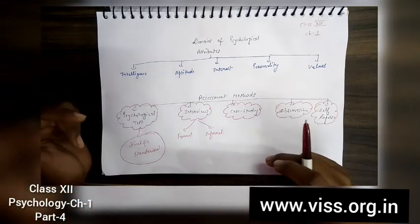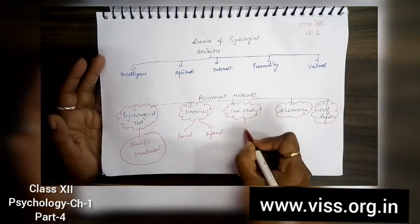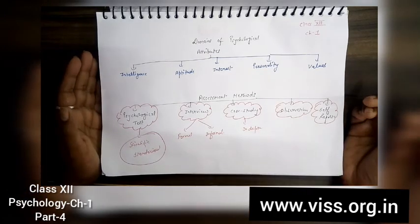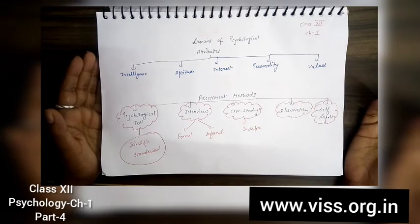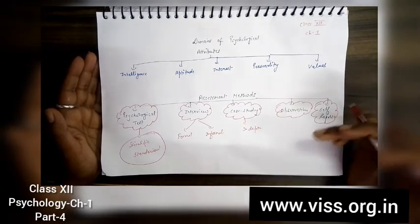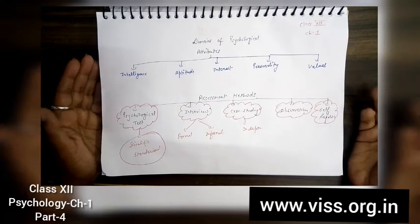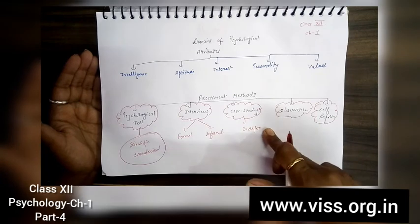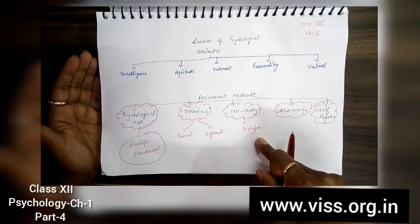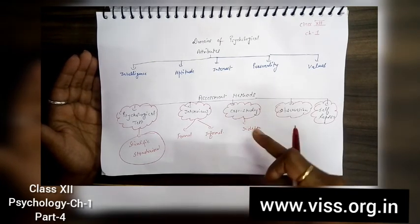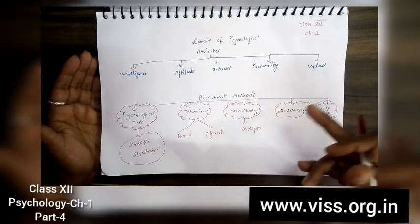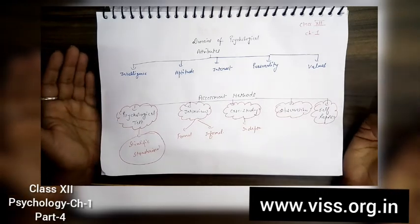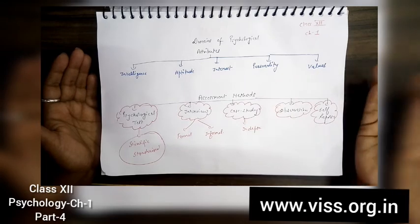Next is the case study. Case studies are in-depth, and that could be done on an individual in detail. The entire history of the individual is taken care of in this, and it is a time-consuming process to understand why a particular person behaves like this. Normally these case studies are taken or done on criminals basically, to understand why these people behave in this way, why did they do so many crimes without having any valid reasons. To understand any individual deeply, we take up this method called case study.